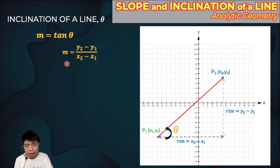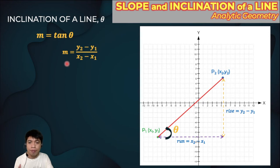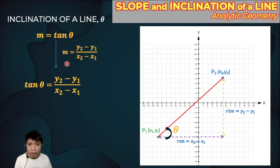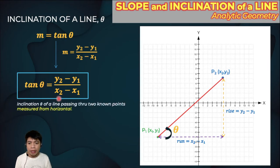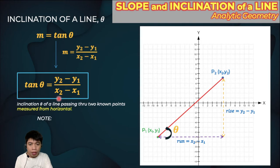From the slope formula, tangent theta equals y2 minus y1 over x2 minus x1. By taking the arc tangent of that formula, we can compute the inclination theta of a line passing through two points, measured from the horizontal. Let me give you a technique so that you don't make mistakes when computing the inclination of the line.